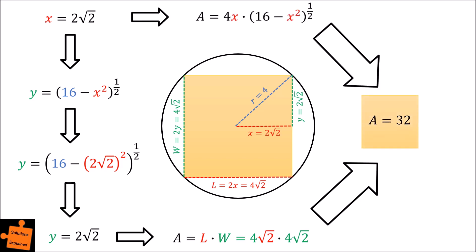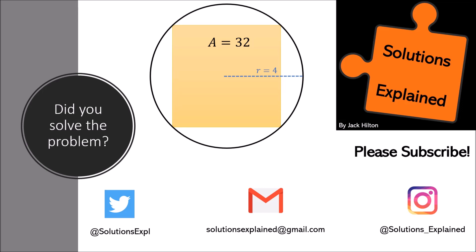32 is the maximum area of a rectangle inside a circle of radius 4, and the rectangle will actually be a square. Did you manage to solve the problem? Let me know down in the comments.